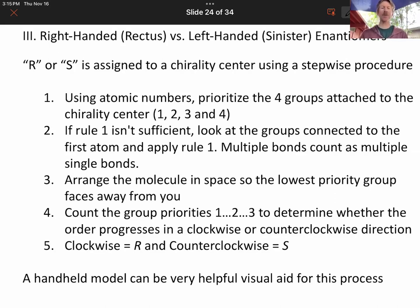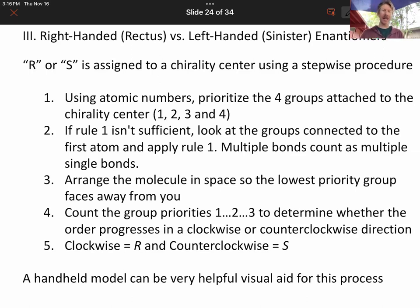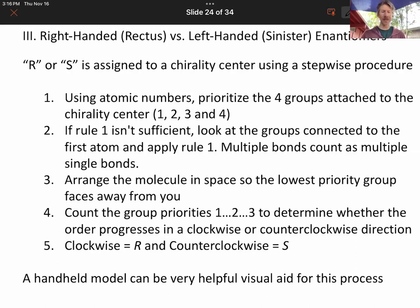You're going to use atomic numbers to prioritize the four groups that are attached to the center carbon. If rule one isn't sufficient, look at the groups connected to those atoms. Arrange the molecule in space so the lowest priority group faces away from you. Count the group priorities one, two, three, to determine whether the order progresses in a clockwise or counterclockwise direction.